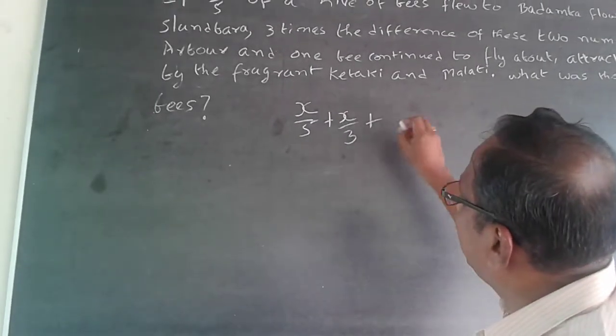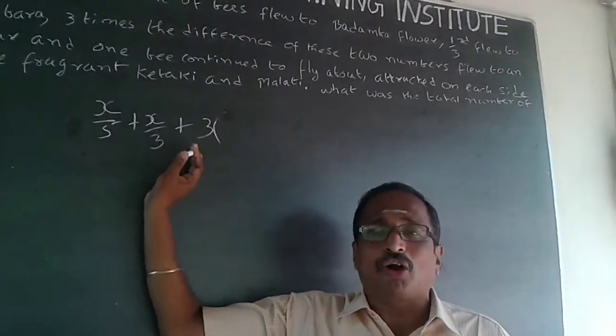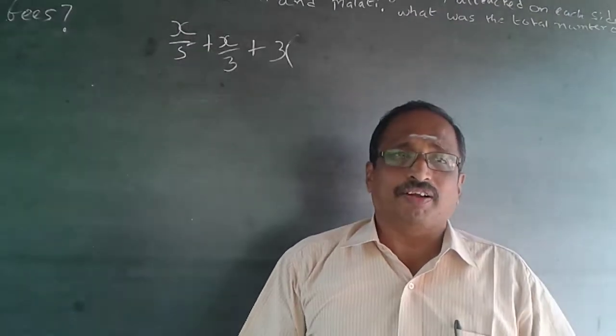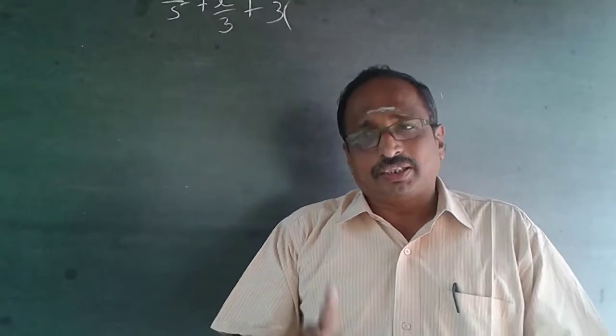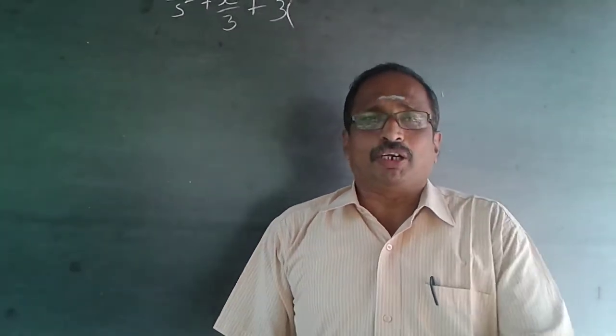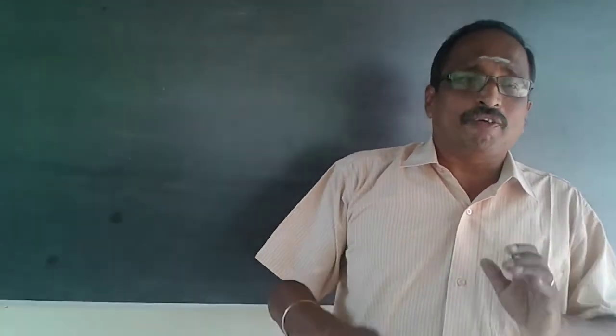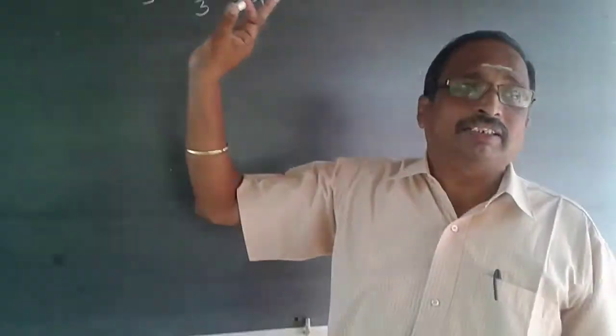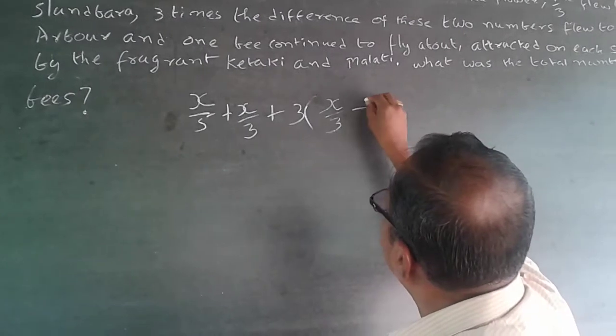Then it says three times the difference. Those who work it out might go wrong here. Whenever I talk about difference, the difference is always positive. Difference between 5 and 3 is 2, not minus 2. So it's always greater number minus smaller number. So plus 3 times x/3 minus x/5, because x/3 is bigger than x/5.